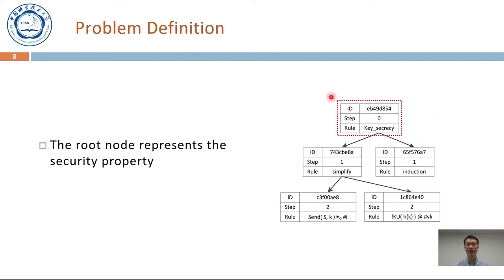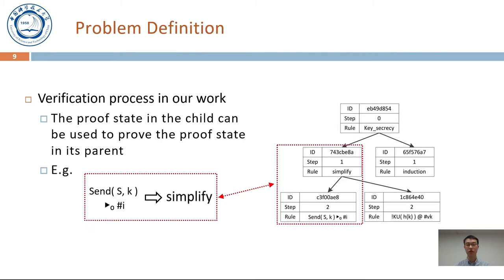The root node of the tree represents the security property. In the tree, the proof state in the child can be used to prove the proof state in its parent. For example, if the proposition sendSk in timepointI is verified, the proposition simplify is verified. Note that it does not require all the children to be verified. Which means if SNSk is not verified and KUHk is verified, the proposition simplify can also be verified.